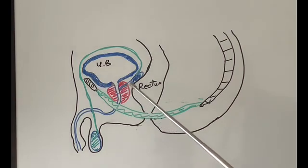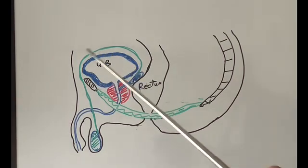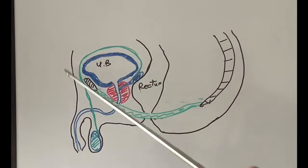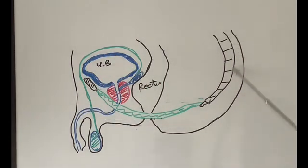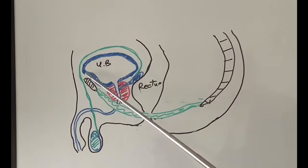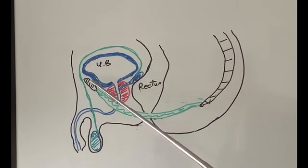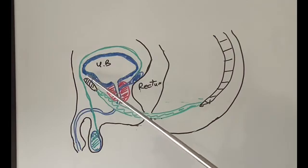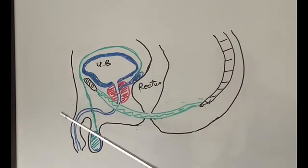Now just to explain this diagram: this is the front of the man, this is the bottom of the man, so that's the spine, and this little black thing here with the lines in it is the pubic bone, which is the bone in the front at the bottom. These are the external genitals.